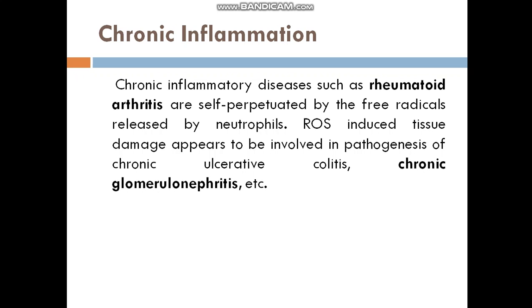Chronic inflammation: Chronic inflammatory diseases such as rheumatoid arthritis are self-perpetuated by the preradicals released by neutrophils. Reactive oxygen species-induced tissue damage appears to be involved in the pathogenesis of chronic ulcerative colitis, chronic glomerulonephritis, etc.